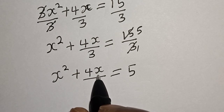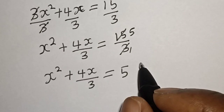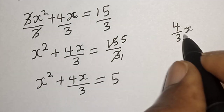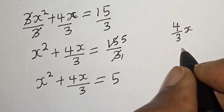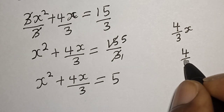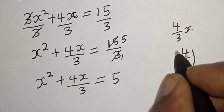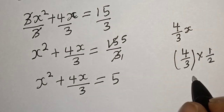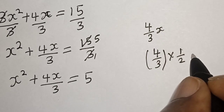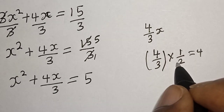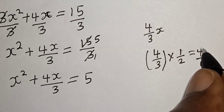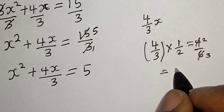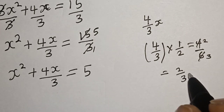Now the coefficient of x here is 4/3. Let's take the half of 4/3: multiply by 1/2. That is, 4 × 1 = 4 and 3 × 2 = 6, giving us 4/6, which simplifies to 2/3. Now let's square this.